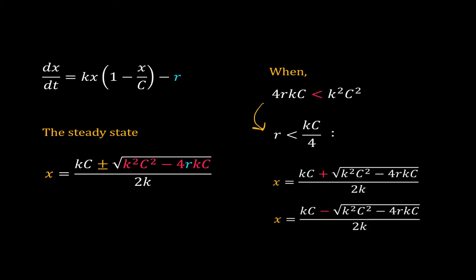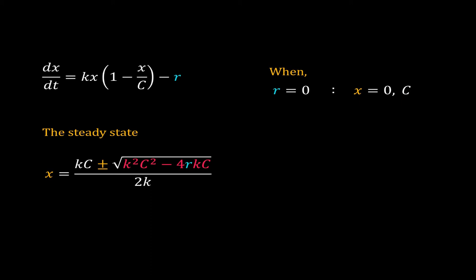In this case the system has two real steady states. The first one is x equal to (kc plus the square root of k²c² minus 4rkc) divided by 2k, and the second steady state is x equal to (kc minus the square root of k²c² minus 4rkc) divided by 2k. Similarly, when r equals 0, there are two steady states: x equal to 0 and x equal to c. A negative value of r is unrealistic, so I will not consider it.